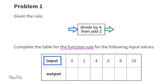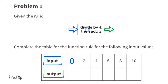When the input is zero, we're going to put zero into the function rule. Zero divided by four is zero, then add two. Zero plus two is two. Zero goes in and a two comes out.